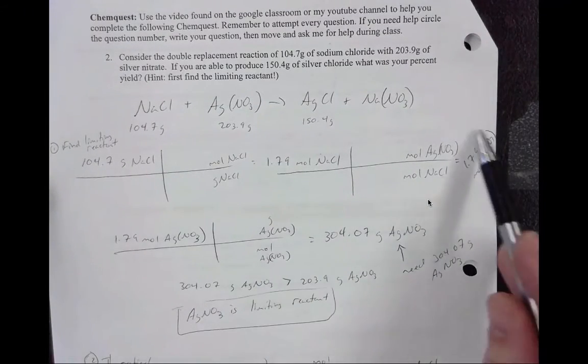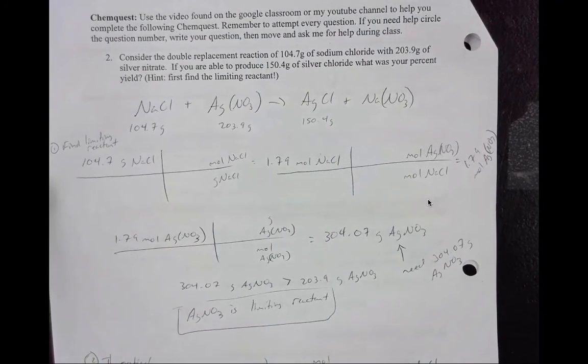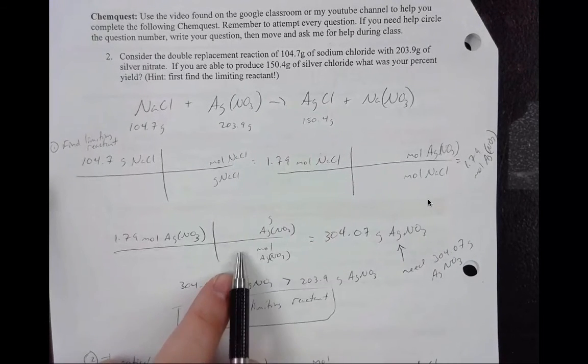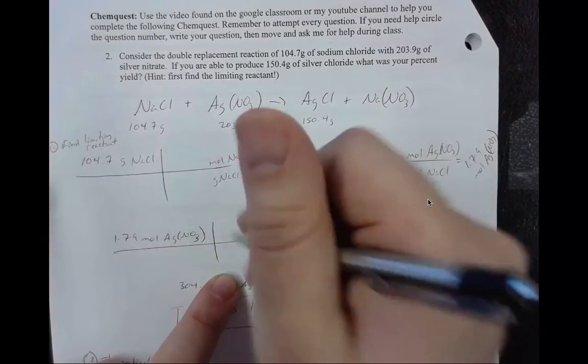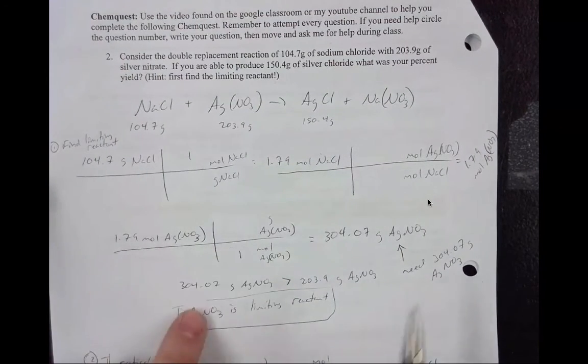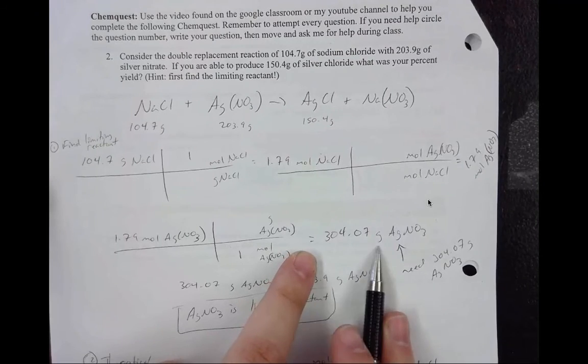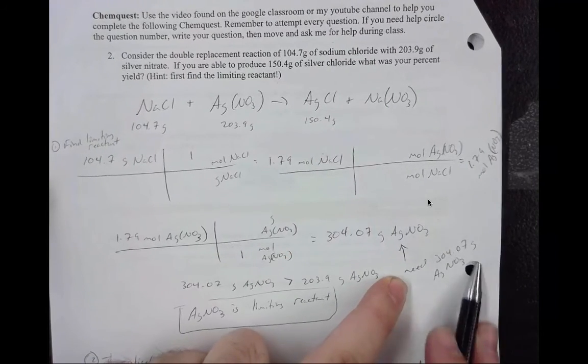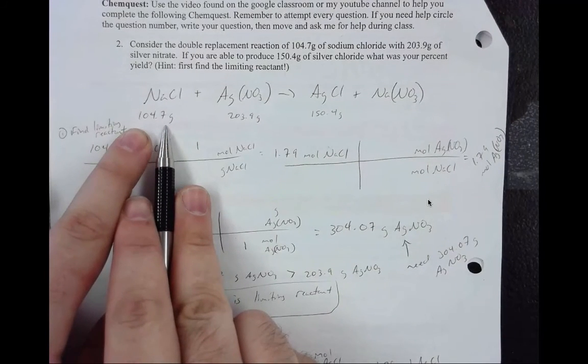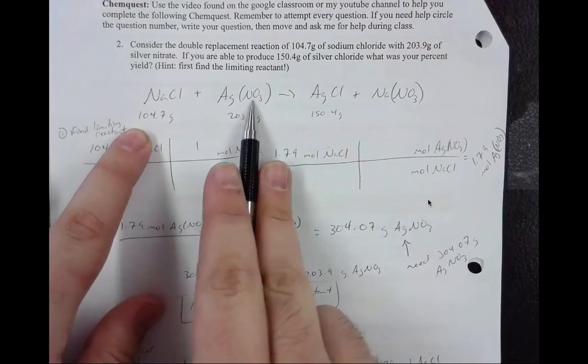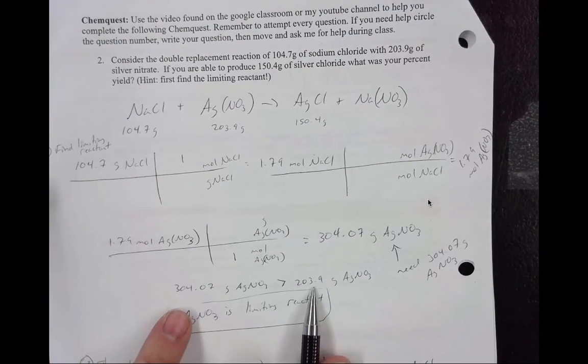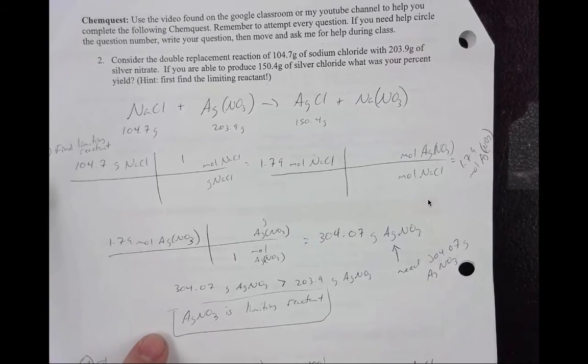When you plug in your coefficients, you'll find that it is 1.79 moles of silver nitrate. After you have your moles of silver nitrate, you can then convert to grams of silver nitrate. So again, we use our periodic table. Whenever you have a mass in the periodic table, it's always one. Then you just need to find the mass and add up. You find that the mass of silver nitrate is 304.07 grams. This tells us this is how much we need. If we have 104.7 grams of sodium chloride, you will need 304.07 grams of silver nitrate. So then that's how we compare. If the number we calculate is larger than what we actually have, that means that silver nitrate is the limiting reactant.